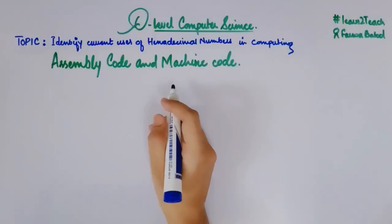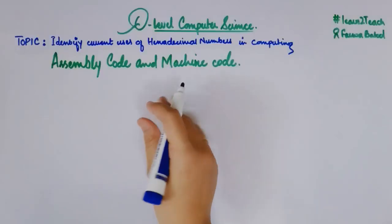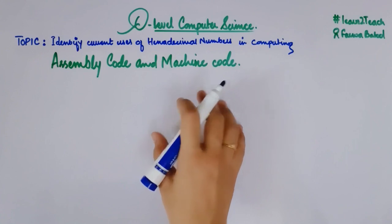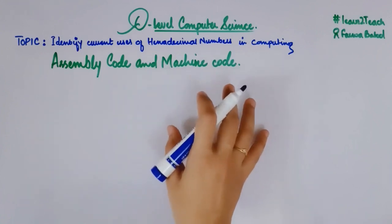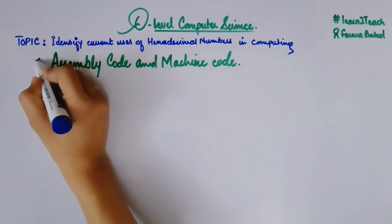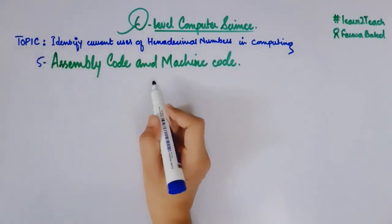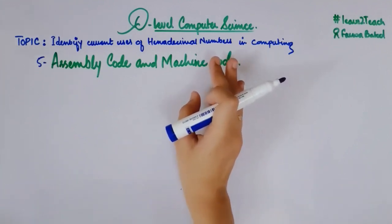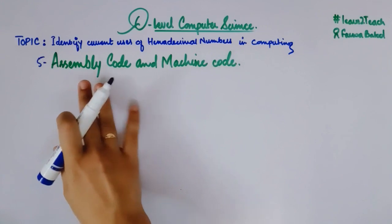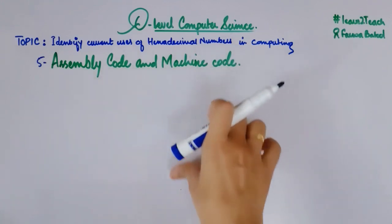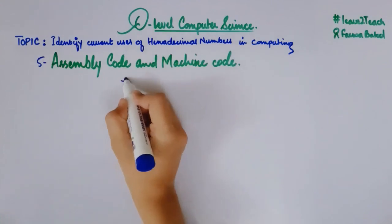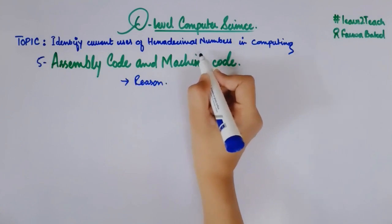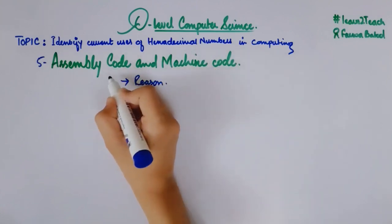Hello everyone, this is your instructor Farwa Batool and welcome to the course of O-level computer science. We were looking at the current uses of hexadecimal numbers in computing. We have covered four of the uses and this is the fifth one: assembly code and machine code. In this video we are going to see how hexadecimal notation or numbers are being used in writing assembly code or machine code. First of all let me tell you the reason behind why we are using hexadecimal numbers in assembly code or machine code.